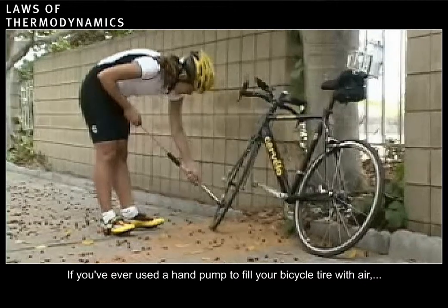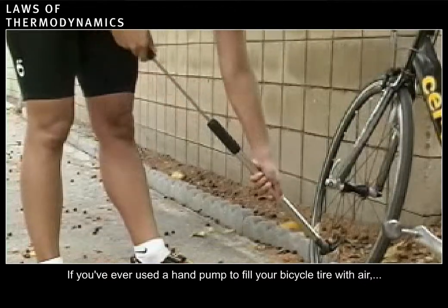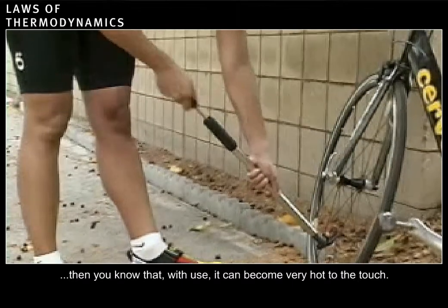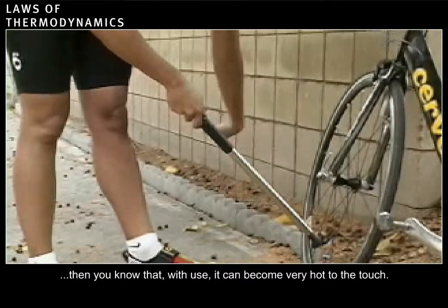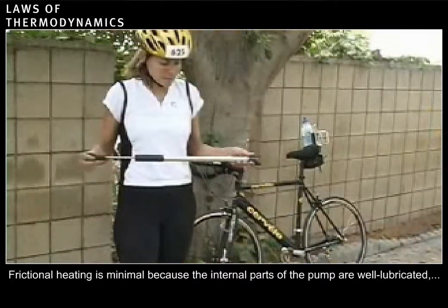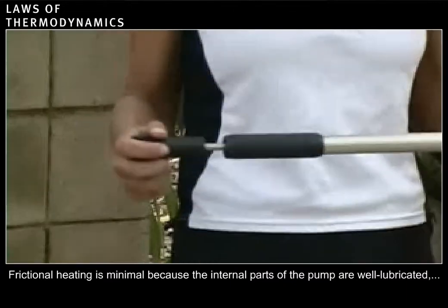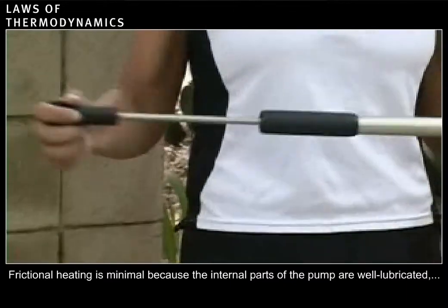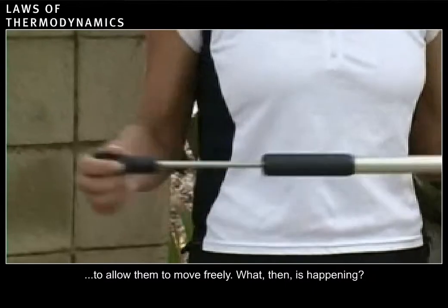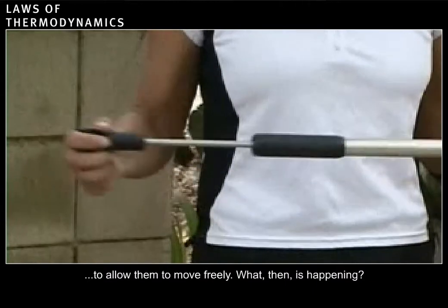If you've ever used a hand pump to fill your bicycle tire with air, then you know that with use, it can become very hot to the touch. Frictional heating is minimal because the internal parts of the pump are well lubricated to allow them to move freely. What then is happening?